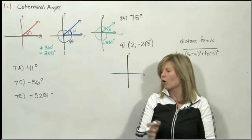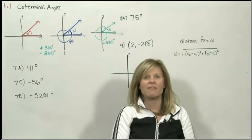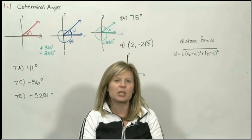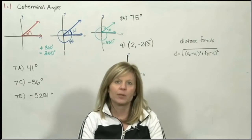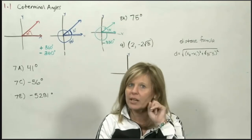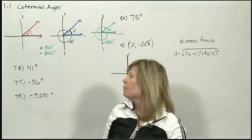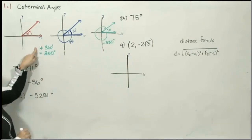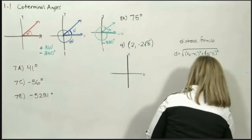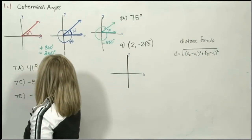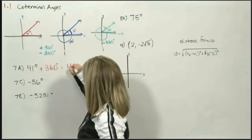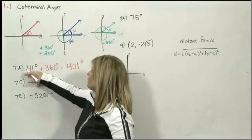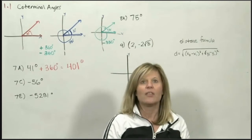Let's try a couple of examples like your homework. Look at example 7 — let's do A, C, and E. The directions say to find a coterminal angle of least positive measure. Coterminal — as soon as you hear that word, you think 360. But they want angles that are positive. So if I start with 41 degrees, I would add 360 to this, and that gives us 401 degrees. If I draw an angle that's 401 degrees, it would be in the same position as a 41-degree angle — that's why they're coterminal.